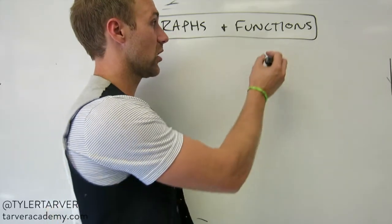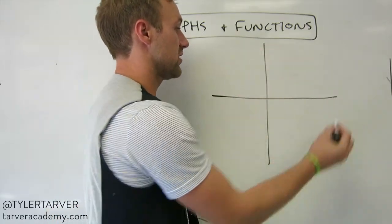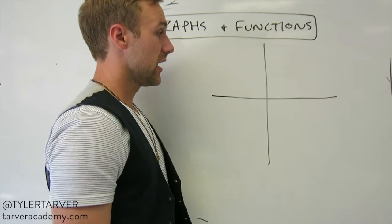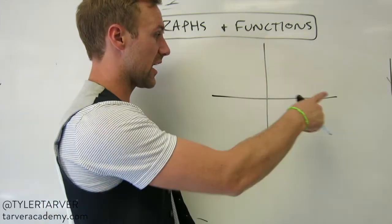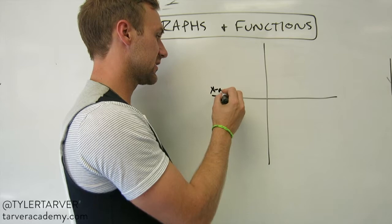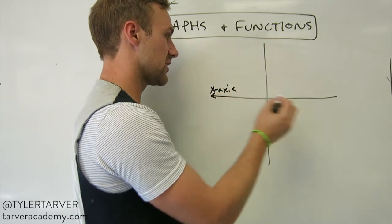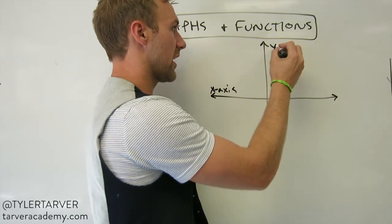I want to talk about a coordinate system. A coordinate system looks like this. It's comprised of primarily two lines. This is your x-axis, the line that goes side to side. And this is your y-axis.